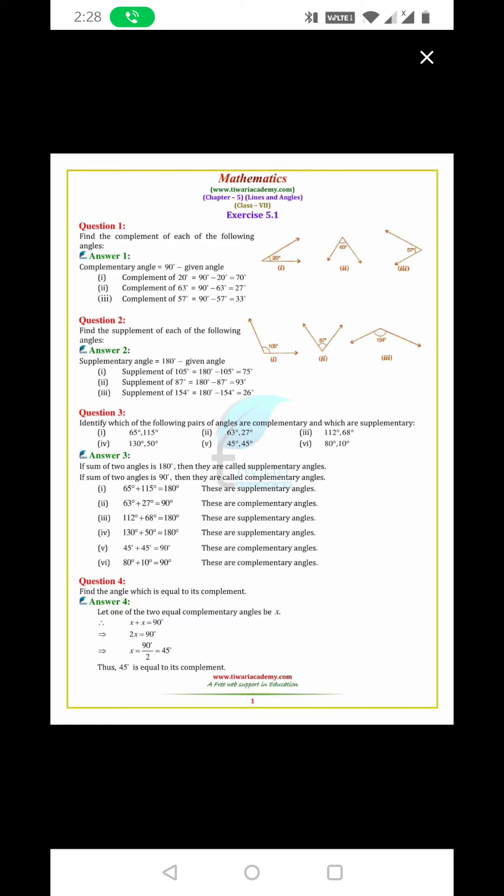Identify which of the following pairs of angles are complementary and which are supplementary. 65 plus 115 equals 180. So these 65 and 115 are supplementary angles. 63 degree and 27 degree are complementary angles because the sum is 90 degree.